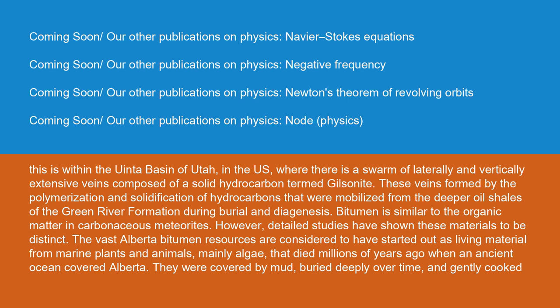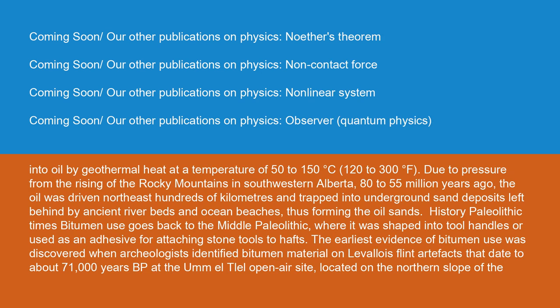Bitumen is similar to the organic matter in carbonaceous meteorites, although detailed studies have shown these materials to be distinct. The vast Alberta bitumen resources are considered to have started out as living material — mainly algae — that died millions of years ago when an ancient ocean covered Alberta. They were covered by mud, buried deeply over time, and gently cooked into oil by geothermal heat at a temperature of 50–150°C. Due to pressure from the rising of the Rocky Mountains 80–55 million years ago, the oil was driven northeast hundreds of kilometers and trapped in underground sand deposits, thus forming the oil sands.